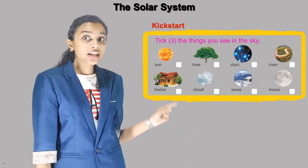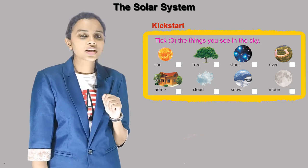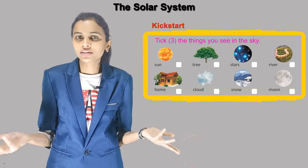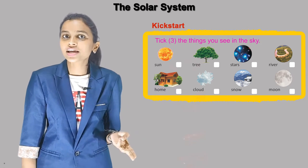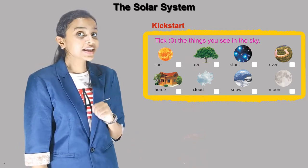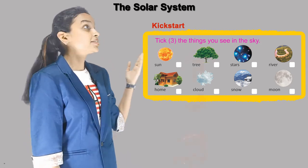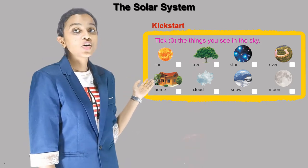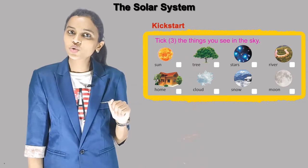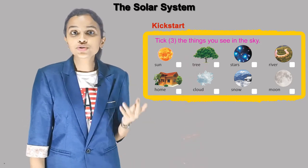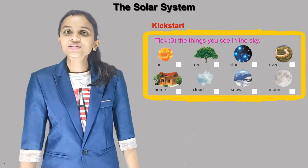Tick three things that you see in the sky. What are the three things that you see in the sky? Sun, tree, stars, river, home, cloud, snow or moon — what you see in the sky, you have to tick on that.